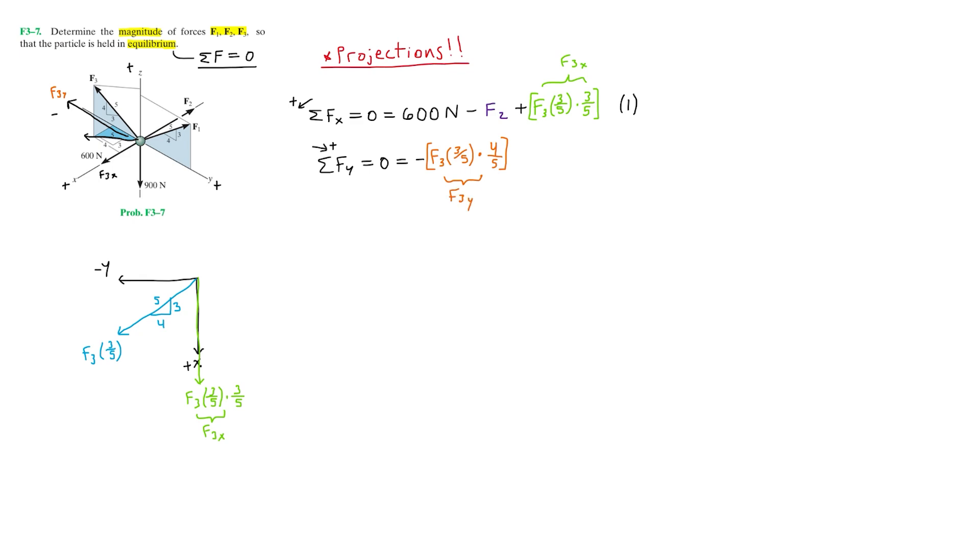Now we have a remaining force in the Y direction, which is force F1, which points towards the positive Y direction. Now this one's simpler to project since it just requires one projection onto the Y axis. So we can just directly obtain the Y component by using this single slope triangle. And so here, once again, four is correspondent to the Y component. Therefore, the Y component of F1 is simply F1 times four over five. And that completes our sum of forces in the Y direction.